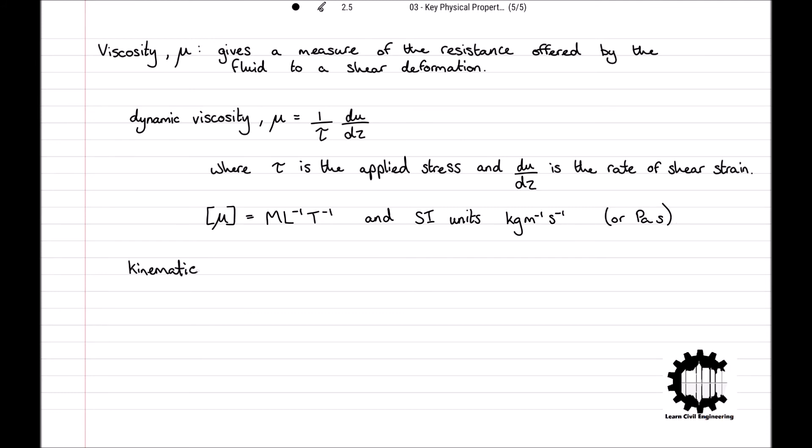Kinematic viscosity, denoted ν, is defined as ν = μ/ρ, where μ is the dynamic viscosity and ρ is the density of the fluid. Kinematic viscosity has dimensions of L²T^-1 and SI units of m²/s.